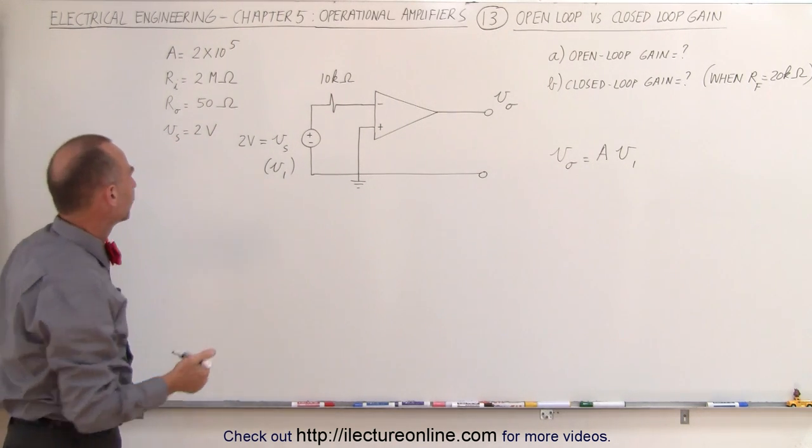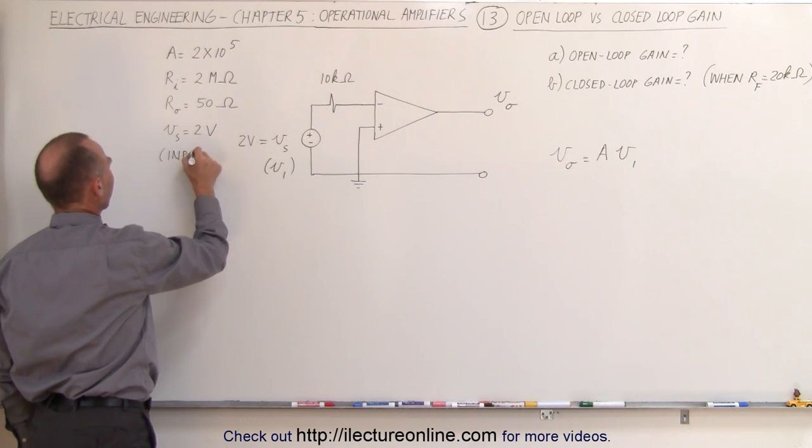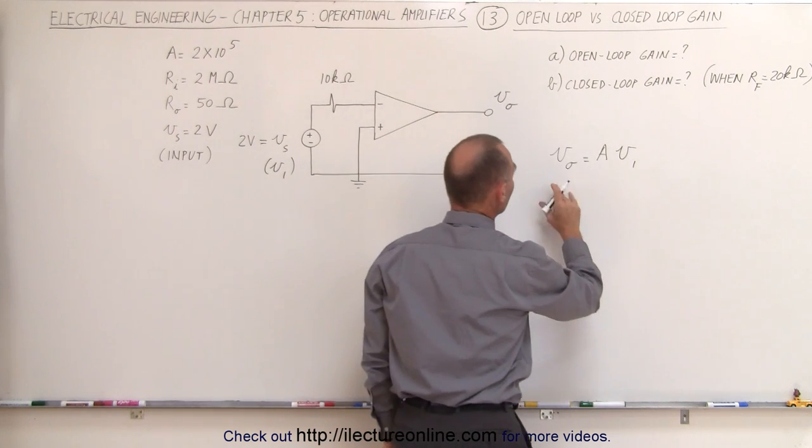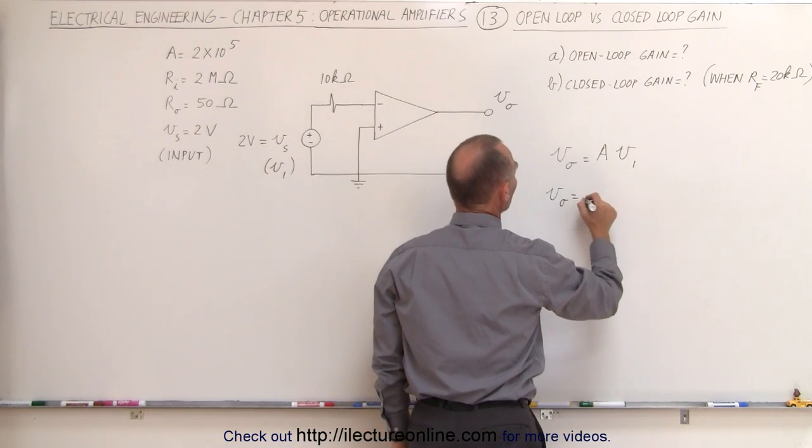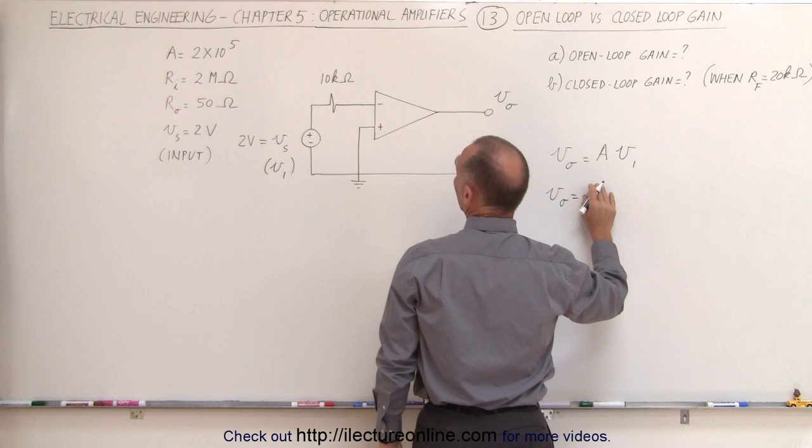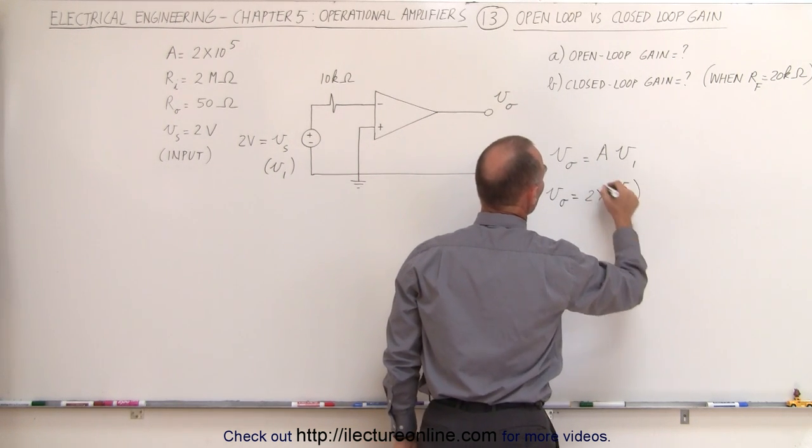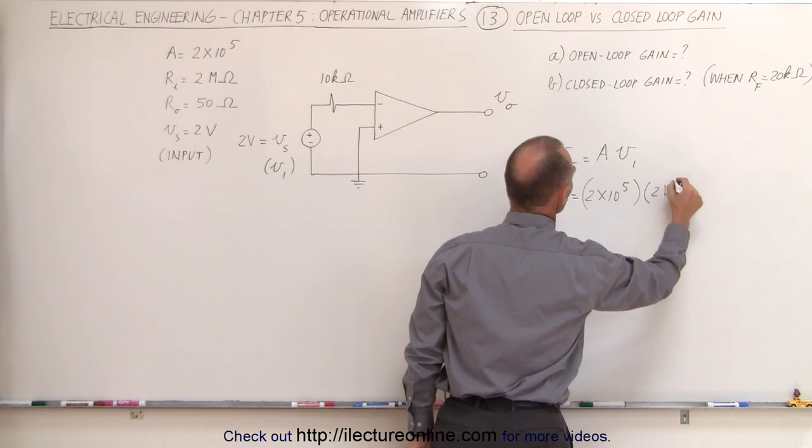Let's call that the input voltage. Now strictly by this equation we can then see that the output voltage V_O is going to be equal to the open loop gain which is 2 times 10 to the fifth multiplied times V1 which is 2 volts.